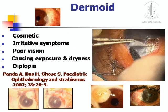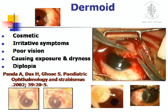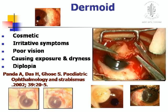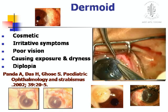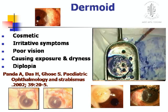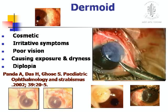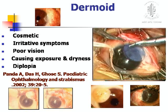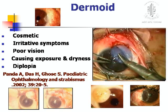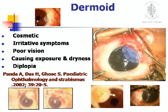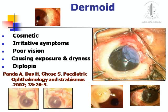Dermoid is a part of STUMPED, and surgery is not indicated in all types of dermoid. It is indicated when cosmetically required, if it has an irritative symptom, if it is associated with poor vision, causing exposure — which is a rare case — even a big dermoid usually does not cause exposure or associated dryness, or if it is associated with diplopia. Then only you have to do the surgery, and depending upon the size and depth, you decide how to perform the excision. Here you have seen a corneoscleral patch was given.